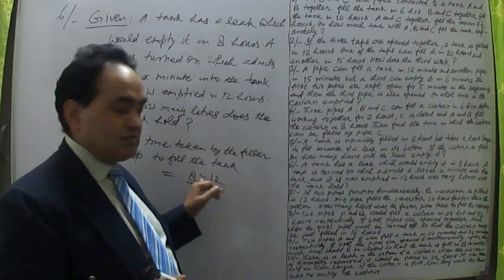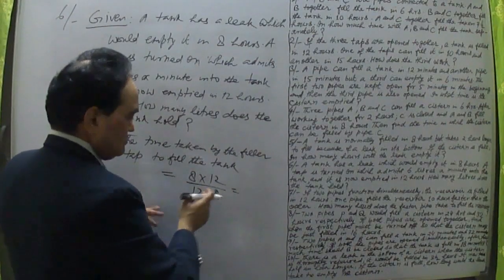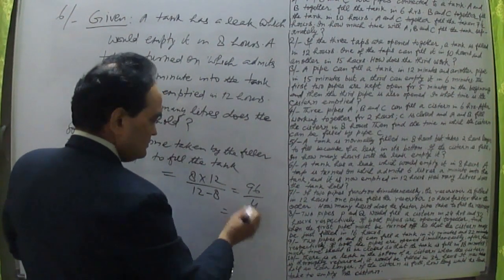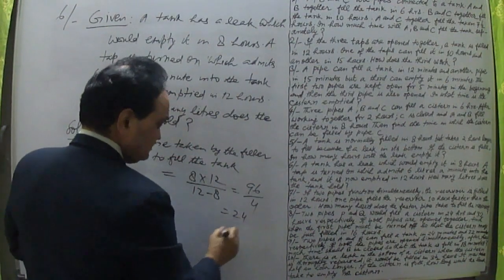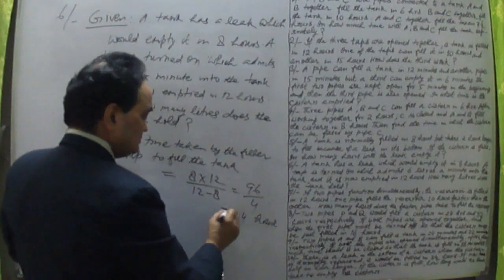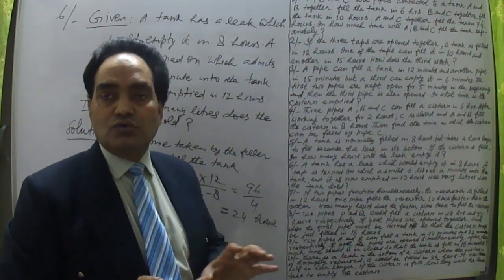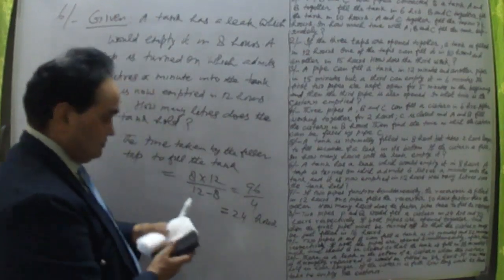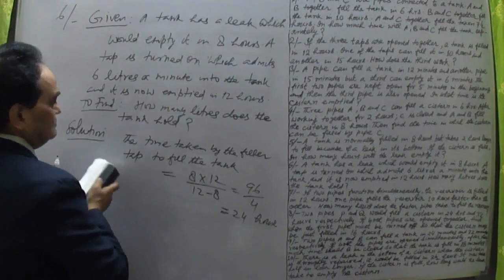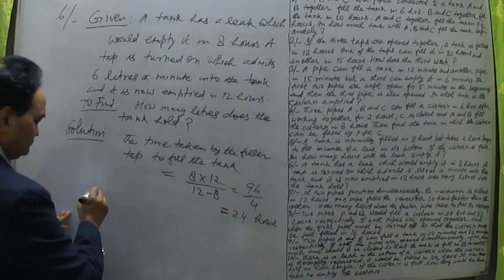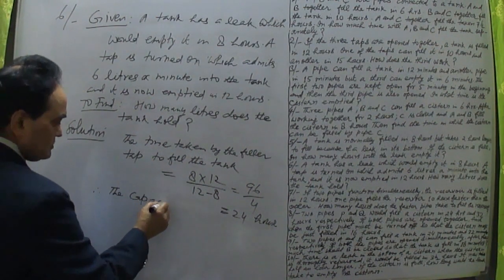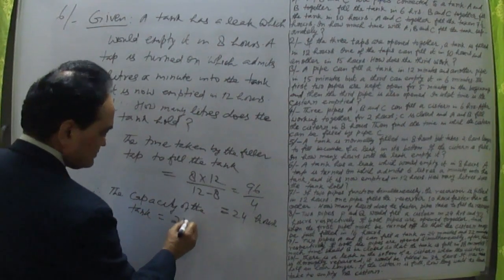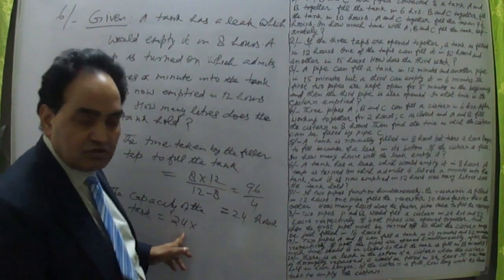That gives us 24 hours for the filler tap to fill the tank alone. Now to find the capacity: the filler tap takes 24 hours, admitting 6 liters per minute, so we convert 24 hours into minutes.